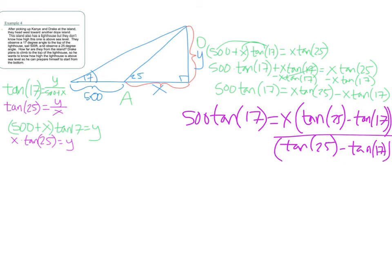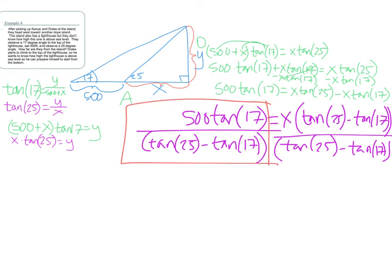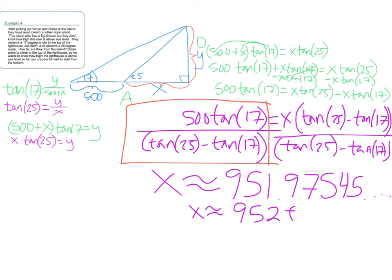So, I can actually divide on both sides by tangent of 25 minus tangent of 17, and I'm actually going to add an extra set of parentheses, because when you plug that in your calculator, you want to have that extra set of parentheses around it. So, once that is all plugged in, and I plug all this, this whole bad boy can be plugged into my calculator all at once, and I will get X equals 951.975456. So, roughly, let's say X is approximately 952 feet.